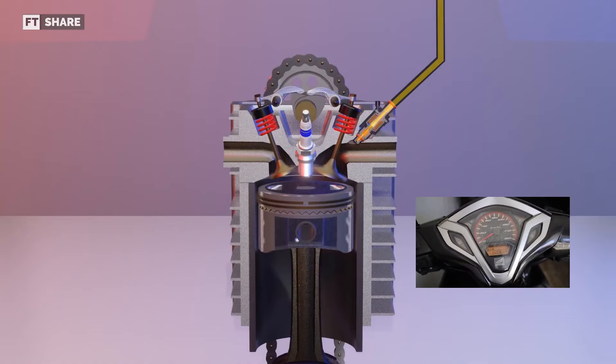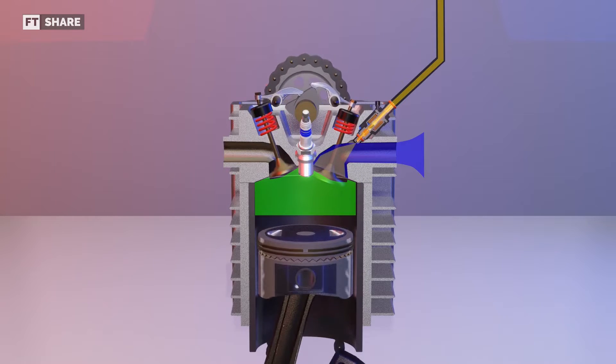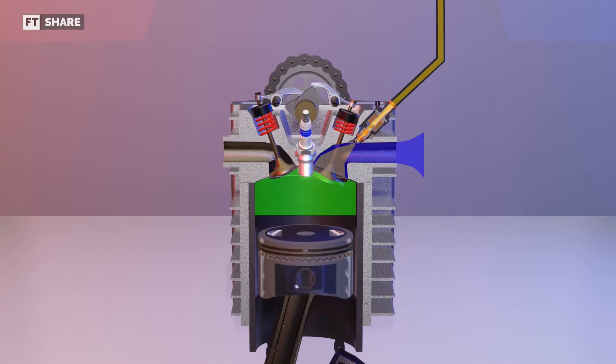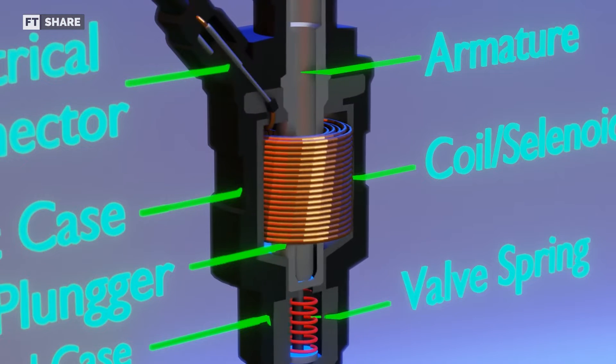Then when the engine is started, the intake valve will open and the engine will suck in air. At the same time, the ECU will give a signal in the form of an electric voltage through the control wire, which is channeled to the coil, which is a copper coil.